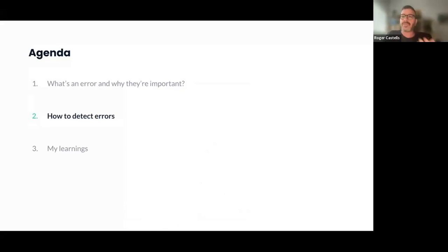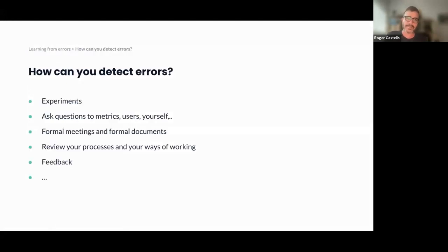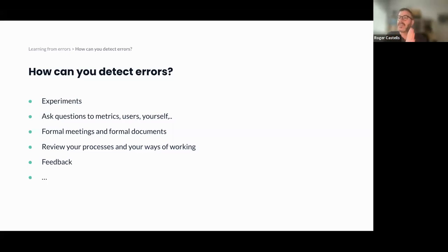Now let's go to how to detect errors. I'm going to explain some basic techniques that will help you detect errors after you took a decision. The list includes: experiments, asking questions to metrics, asking questions to users or to yourself, formal meetings and formal documents, reviewing your processes and ways of working, and asking for feedback. There are more things you could do, but let's go with these classics.